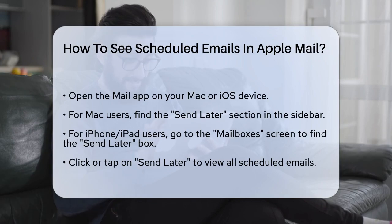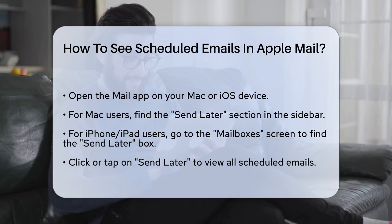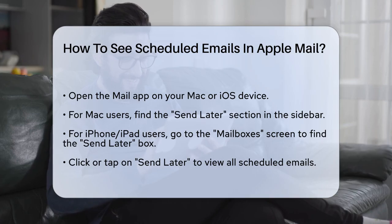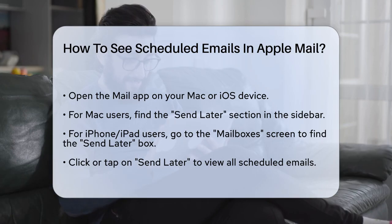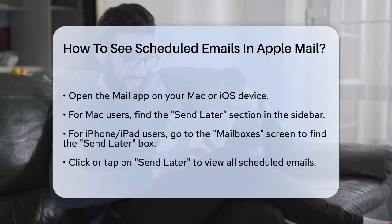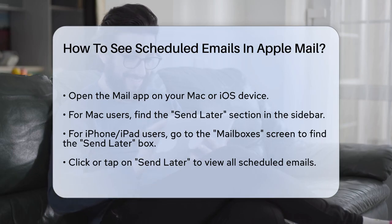First, if you're on a Mac, you can find your scheduled emails by navigating to the Mail app. Once you're in the app, look at the sidebar and click on Send Later. This will show you a list of all the emails that are scheduled to be sent at a later time.